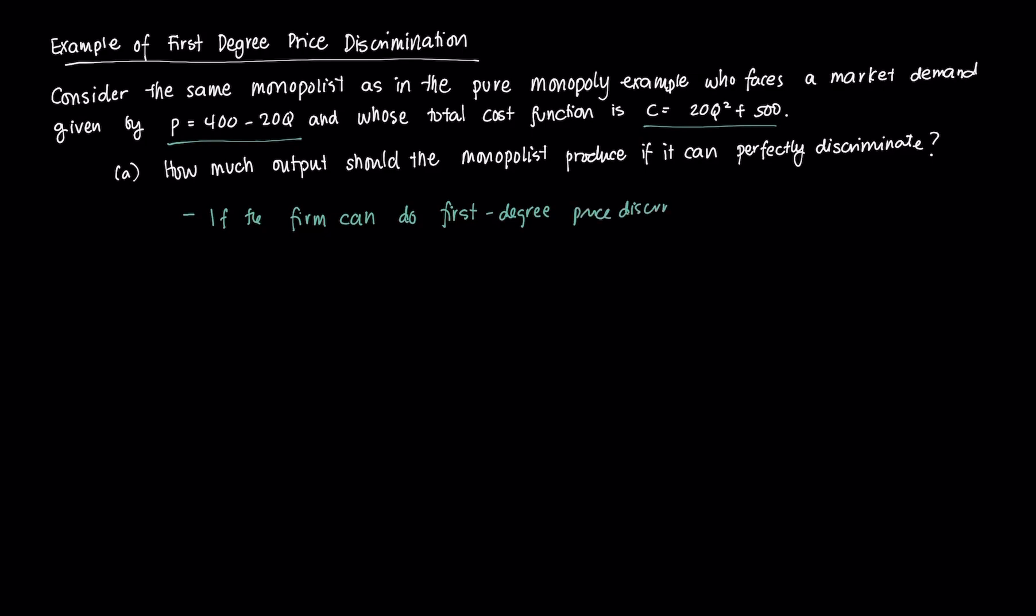The optimal total output chosen satisfies the FOC of P equals MC. Now this differs from a pure monopoly which is MR equals MC, and it's because the monopolist can know exactly the maximum willingness to pay of a consumer.